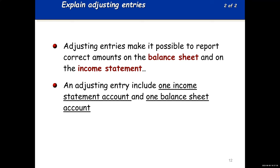Adjusting entries make it possible to report correct amounts on the balance sheet and on the income statement. If you have an adjusting entry, one of those entries has to be an income statement account and the other one has to be a balance sheet account. For instance, a typical supplies adjusting journal entry would be debit supplies expense, credit supplies. Supplies expense is the income statement account; supplies is an asset — that's a balance sheet account. So an adjusting entry will always have one income statement account and one balance sheet account.